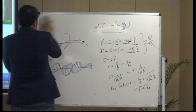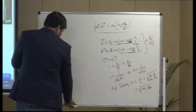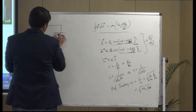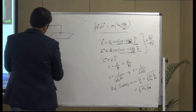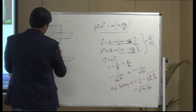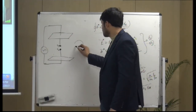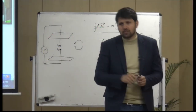I will draw the Hertz experiment — we have only 5 minutes left. This was the source and this was the detector: an antenna or loop, out of which a small portion was cut and two spheres were fixed.